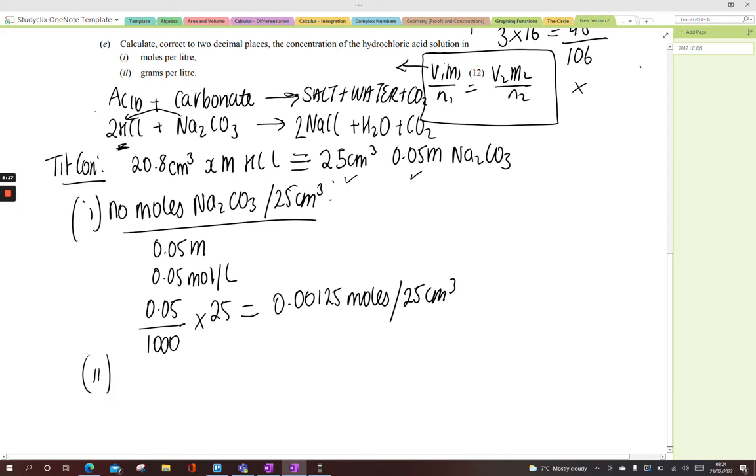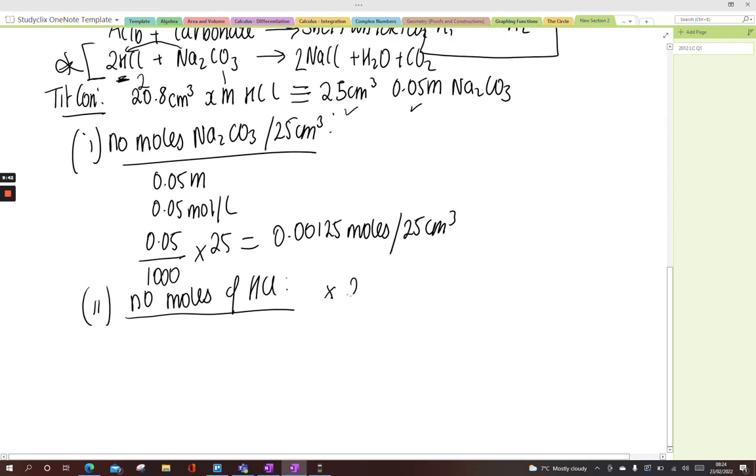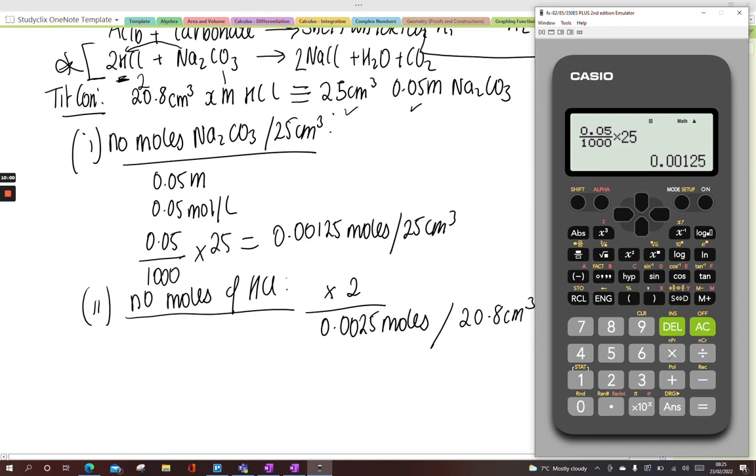Next thing they'll ask me: using the equation, what's the number of moles of HCl per 20.8 cm³? All you've got to do is look at the ratio. The ratio of reactants is 2:1. I have 0.00125 moles of sodium carbonate. To work out the moles of hydrochloric acid, just times that by two, because the coefficient of HCl is two. We get 0.0025 moles, and this is the crucial bit—in what volume? 20.8 cm³ of HCl. Never delete those numbers.